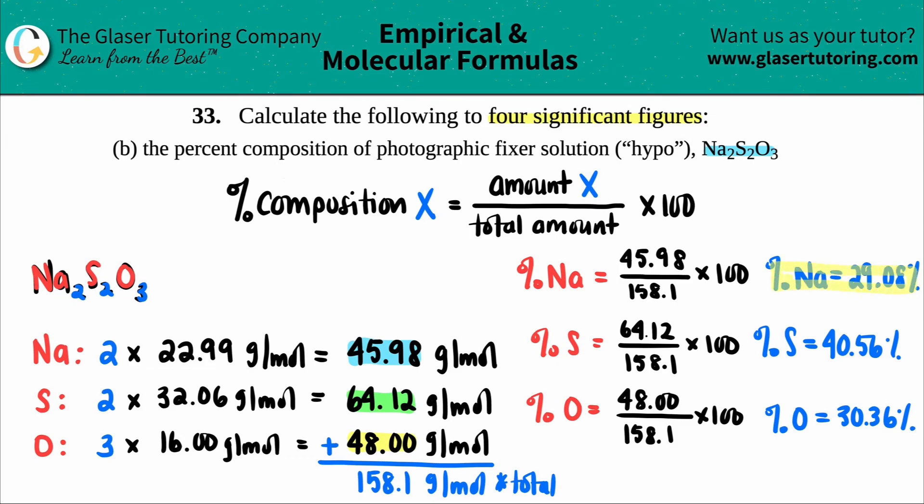So here are your answers. Percent sodium, 29.08%. Percent sulfur, 40.56%. And then the oxygen is 30.36. And yeah, from that, we can tell that majority of the compound is sulfur, has the highest percent.